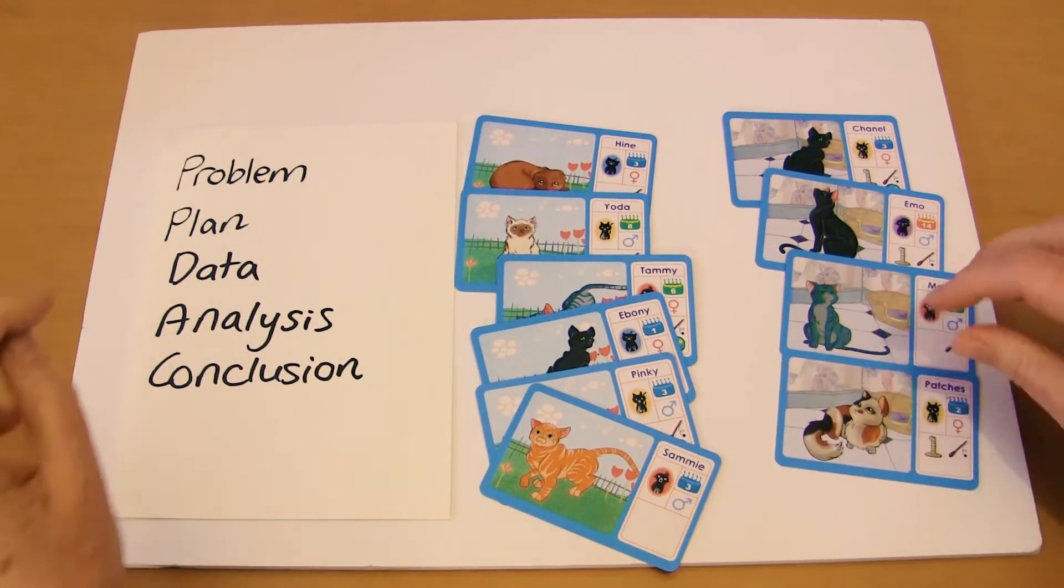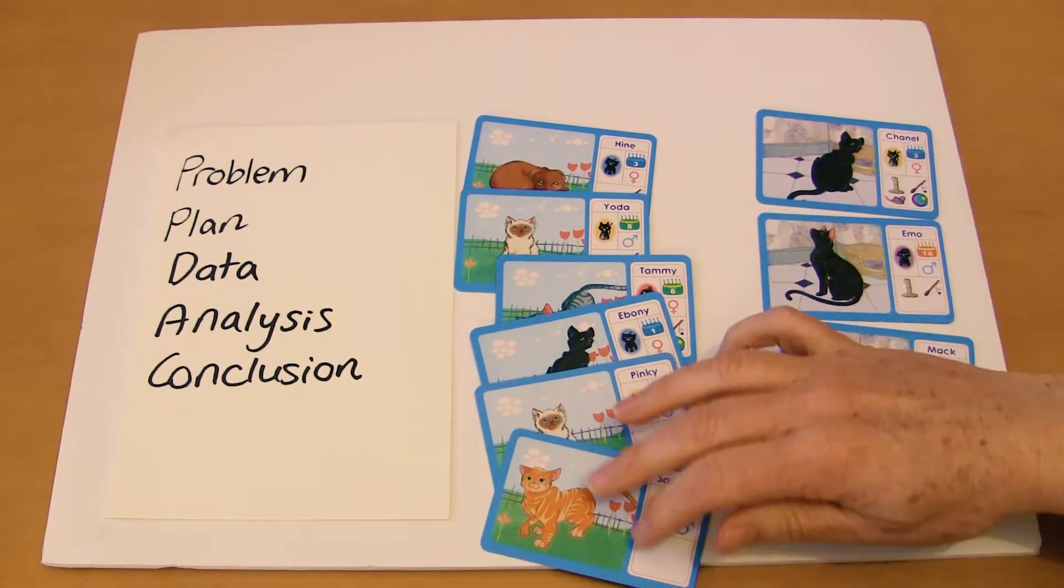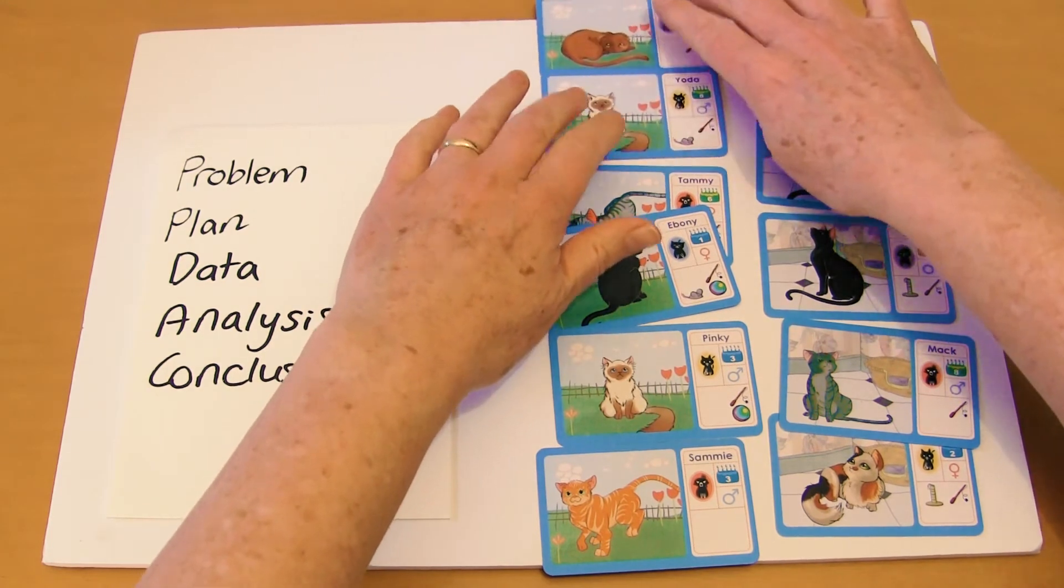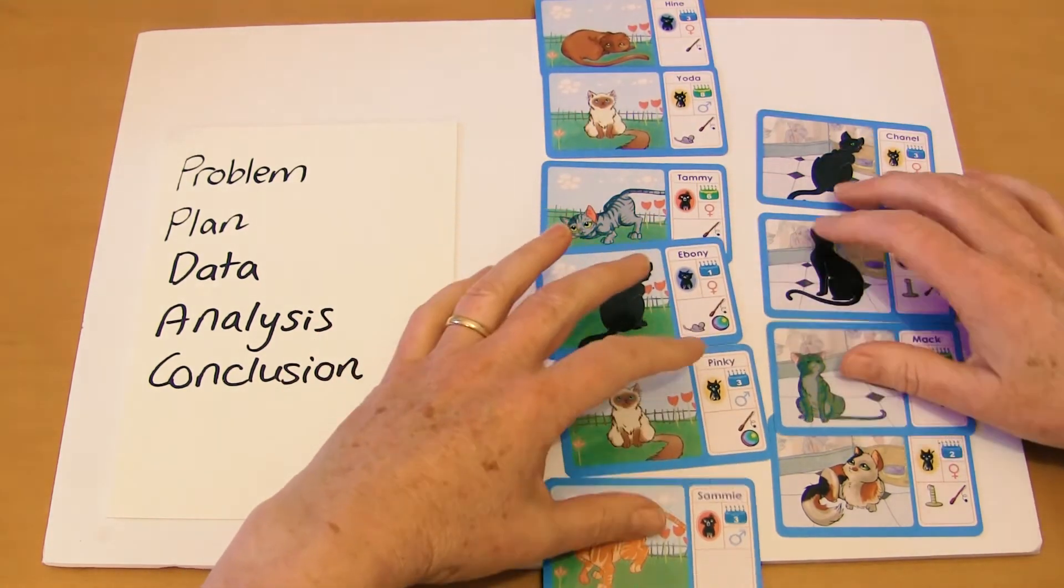And so we do our analysis. So we count up how many we have of each one. And you can even have a sort of a bar chart here made with the cards.